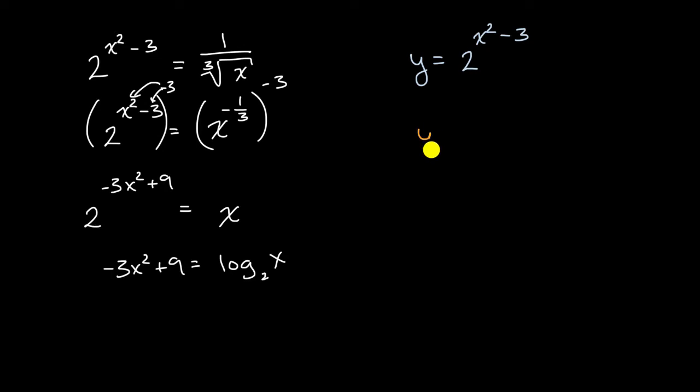And then you had another that was y is equal to one over the cube root of x, and then you could graph each of these and then you could see where they intersect.